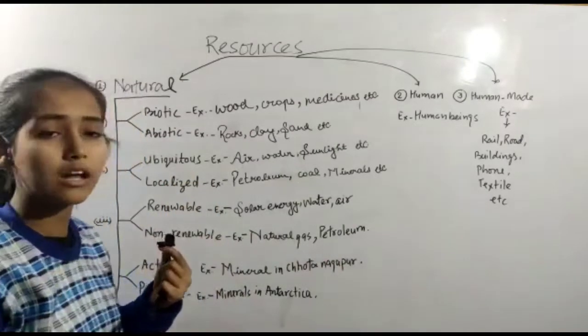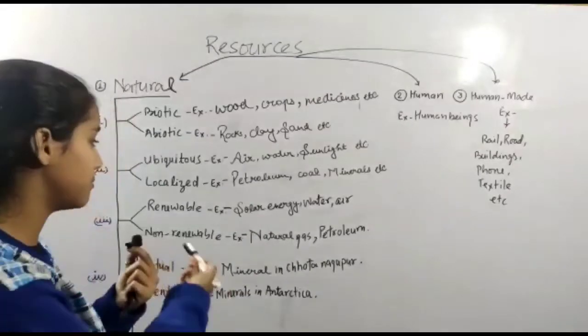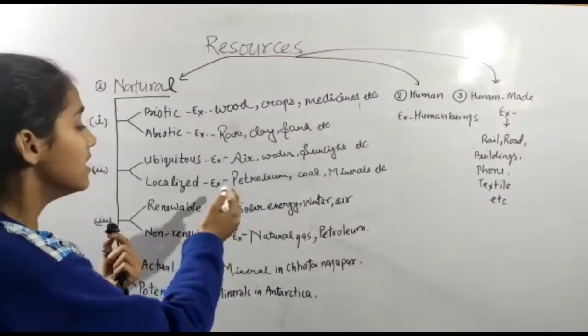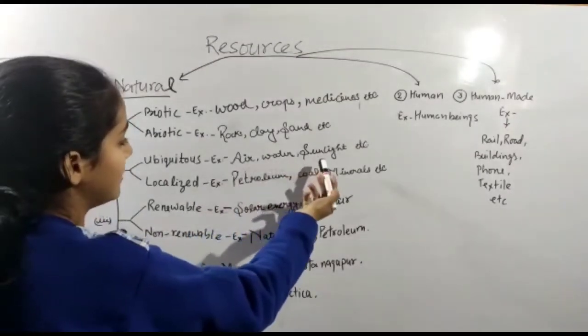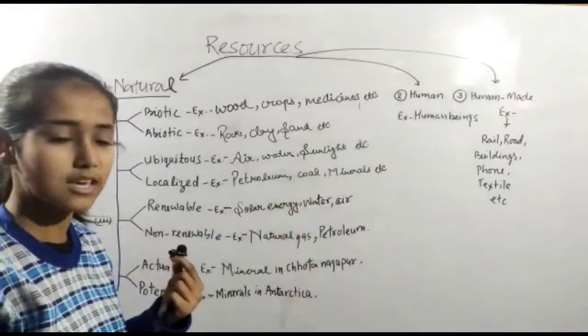Ubiquitous resources - these resources are found everywhere. For example air, water, sunlight. These resources are found everywhere.